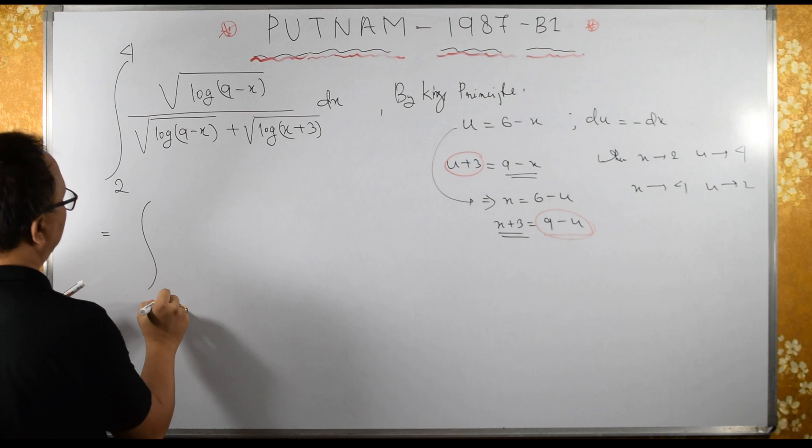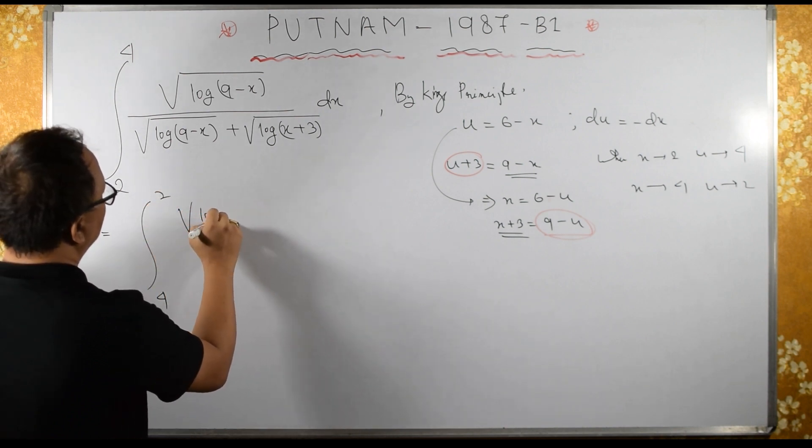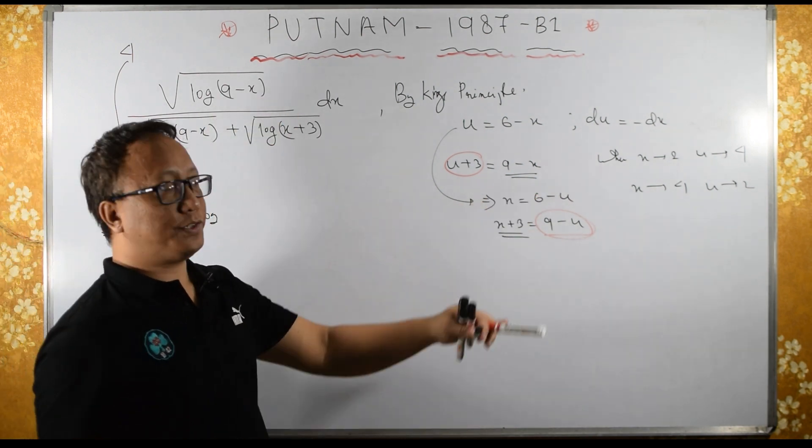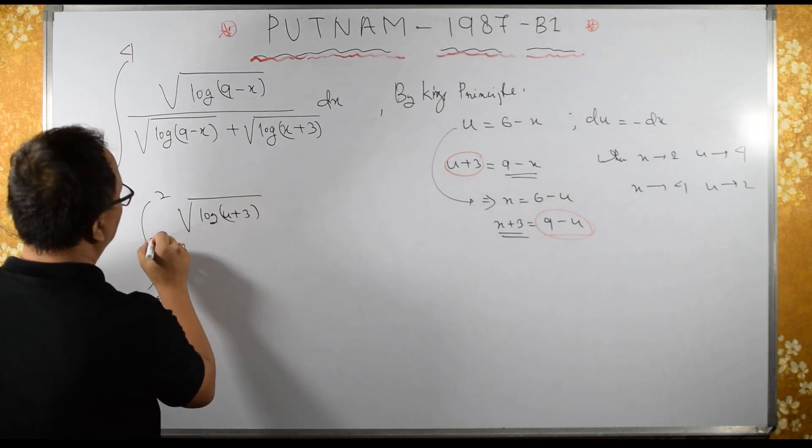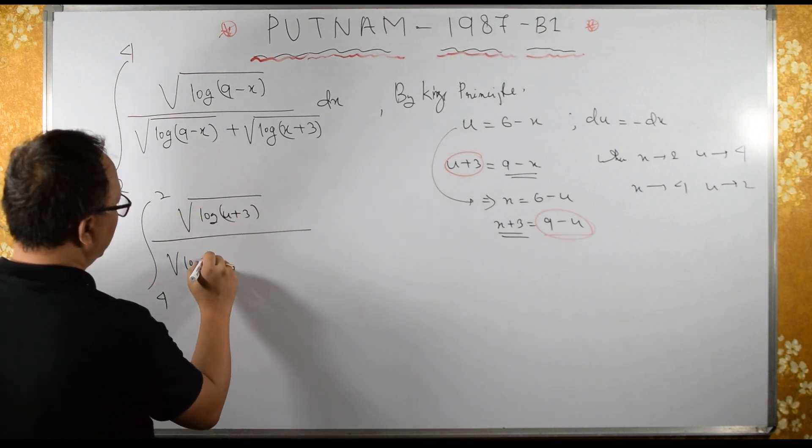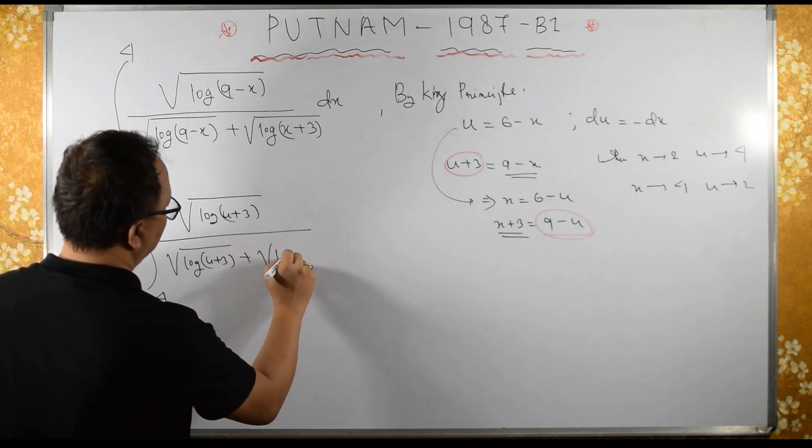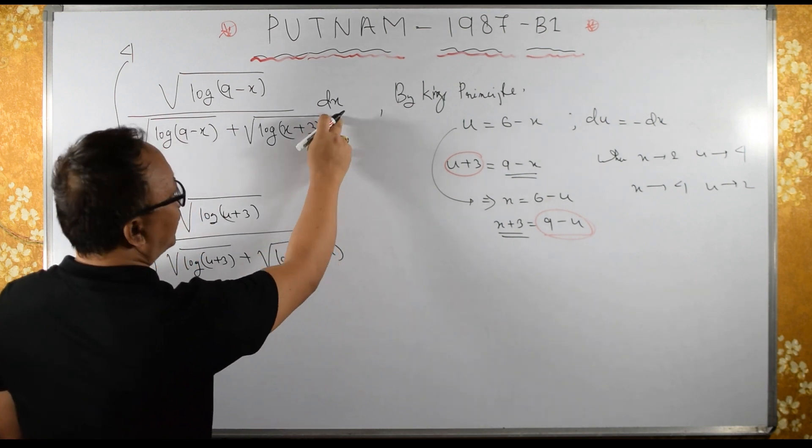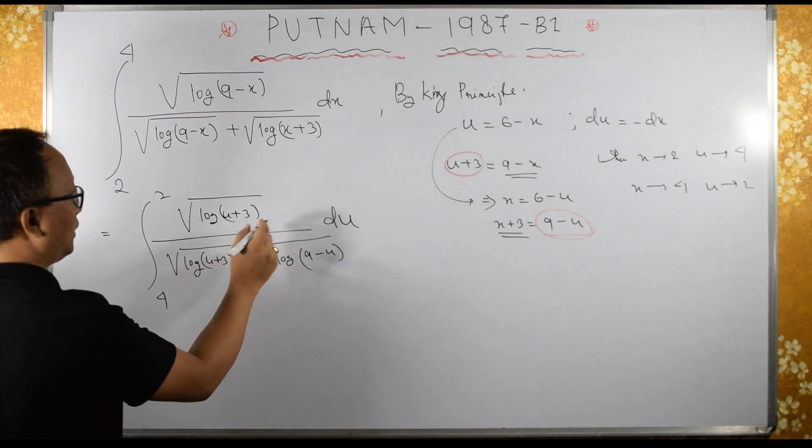Therefore, this integral becomes 4 to 2, square root of log of, what is 9 minus x? 9 minus x is u plus 3. Here we have u plus 3. Here square root of log of 9 minus x is 9 minus u. And dx is minus du.